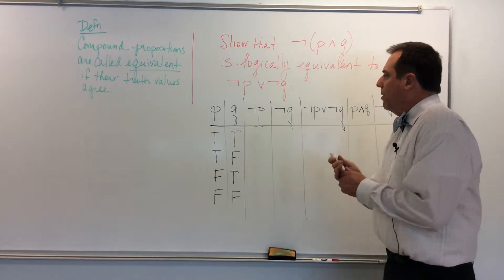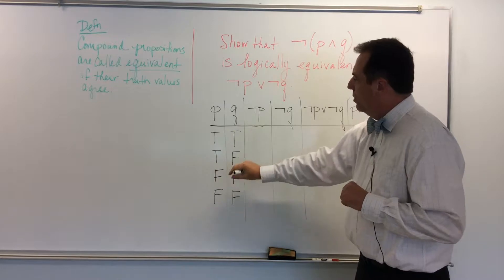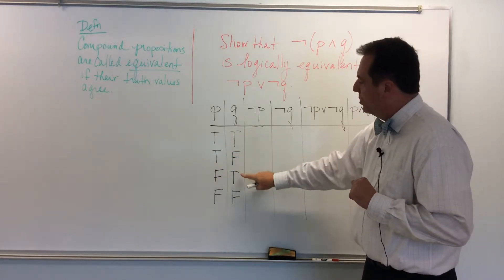Okay, so I've already set this up, as I said, and I have the normal two true, two false, true, false, true, false.